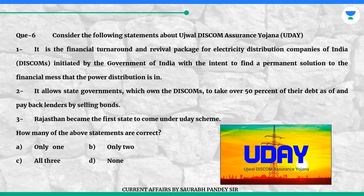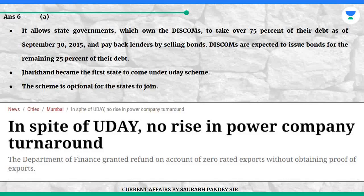How many of the above statements are correct? A. Only one. B. Only two. C. All three. D. None. Answer is A. It allows state governments, which own the DISCOMs, to take over 75% of their debt as of 30th September 2015 and pay back lenders by selling bonds. DISCOMs are expected to issue bonds for the remaining 25% of their debt. Jharkhand became the first state to come under the UDAY scheme. The scheme is optional for the states to join.